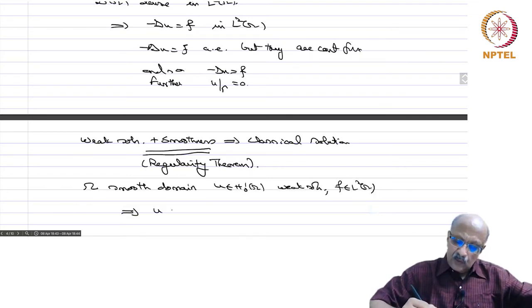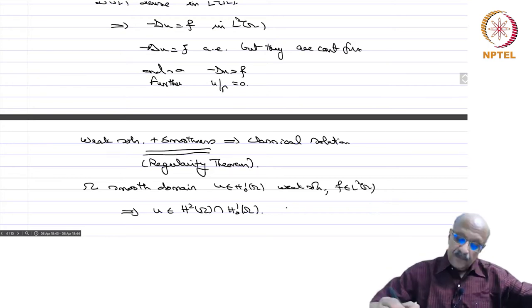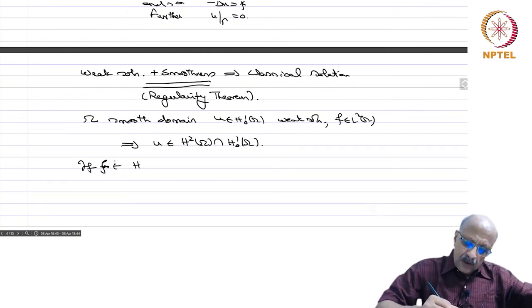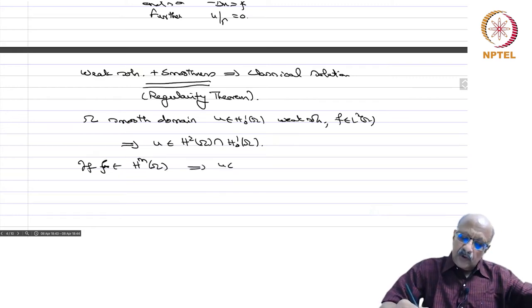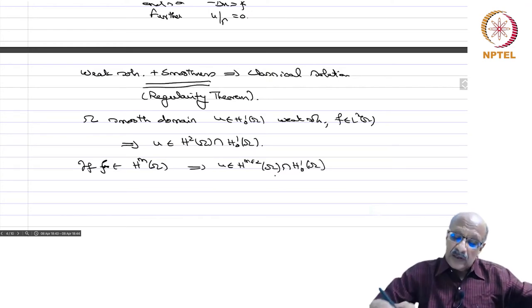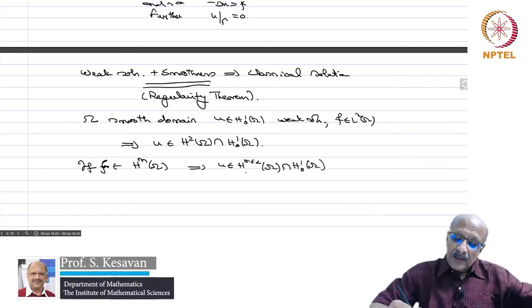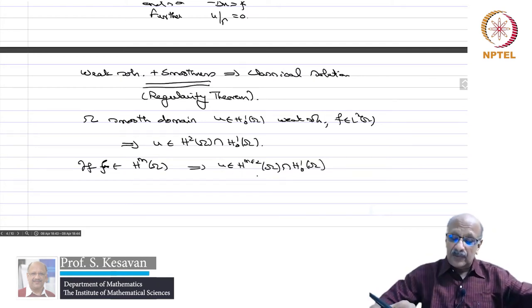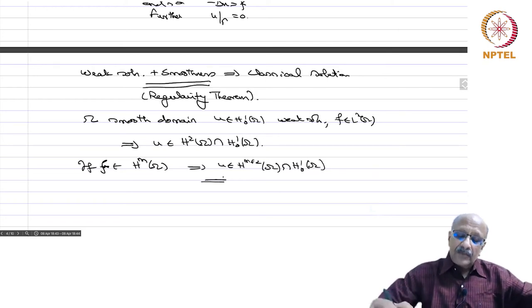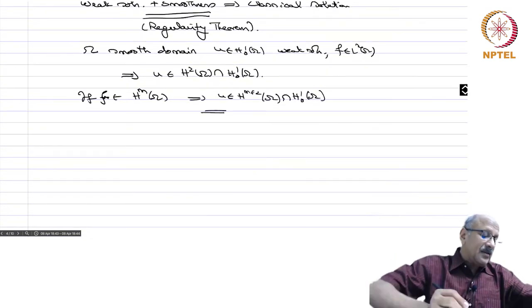If f belongs to H^m(omega), this will imply u belongs to H^{m+2}(omega) ∩ H^1_0(omega). These are examples of regularity theorems for the Laplace operator with reasonably smooth domains. Therefore, if m is large enough, then with the Sobolev embedding theorems, you can deduce that u is differentiable as many times as you want and thus obtain a classical solution. The regularity theorem needs to be proved; it is not an obvious thing and that is a different story.